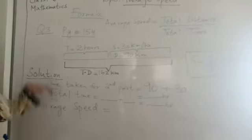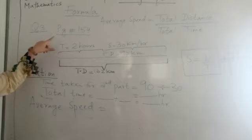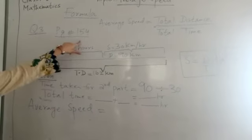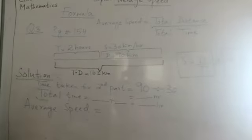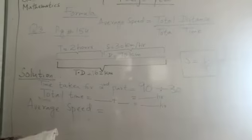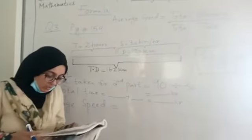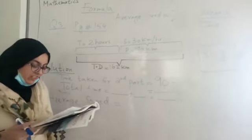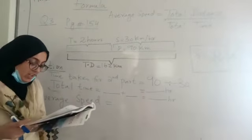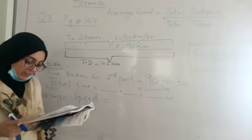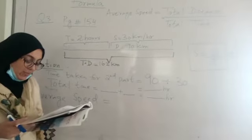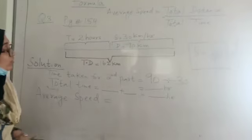Now I have given you a question which is in your textbook on page number 154. I am going to read it and explain. A ship travelled the first part of a journey in 2 hours. It travelled the remaining 90 km of the journey at an average speed of 30 km per hour. The total distance travelled by the ship was 162 km.